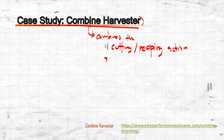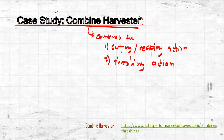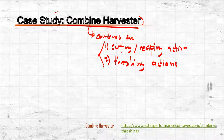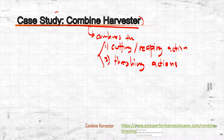...and the threshing action. Two separate actions that were traditionally done separately are now combined. That's why it's called a combined harvester. When that machine passes through standing crops, the end output is already the threshed grains.